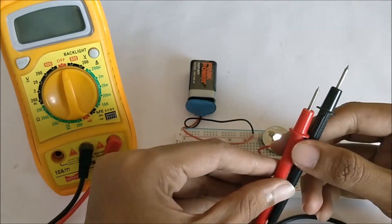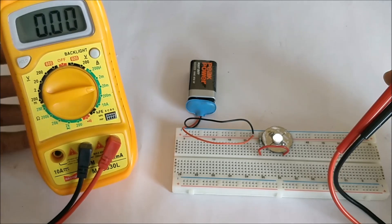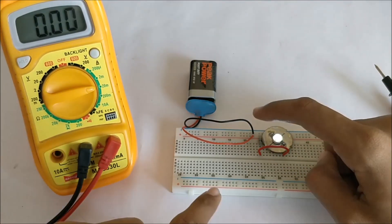So here we have the probes. Now let me set the multimeter at maximum to 20 milliamps because the LED is not going to consume more than 20 milliamps for sure.